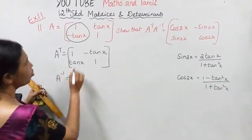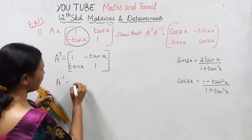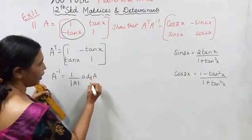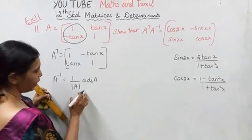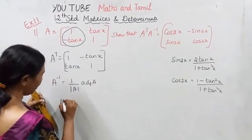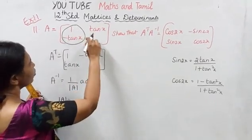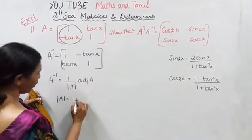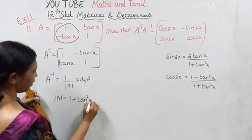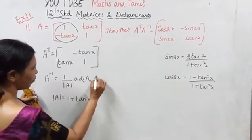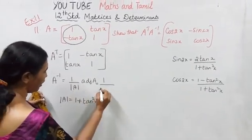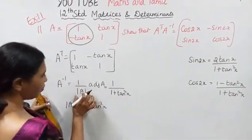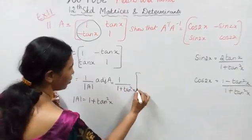Now find A inverse. For a 2 cross 2 matrix, the formula is A inverse equals 1 by determinant of A into adjoint of A. First, find the determinant of A. Determinant of A equals 1 into 1 minus tan x into minus tan x, which gives 1 plus tan square x. So A inverse equals 1 by 1 plus tan square x into adjoint A.